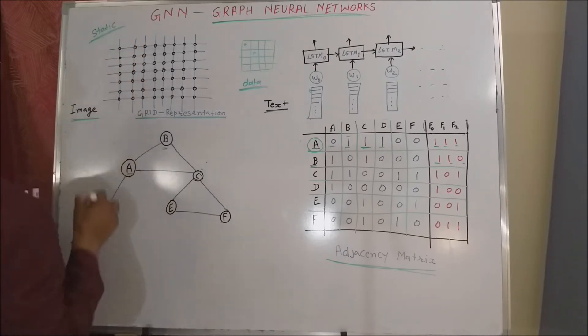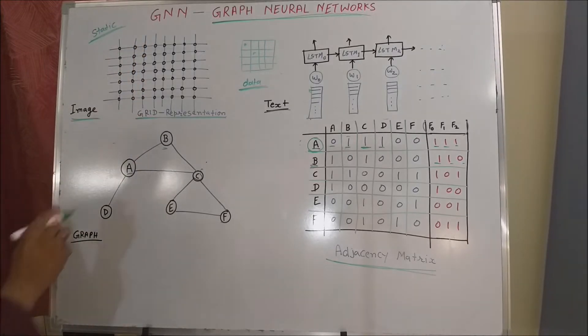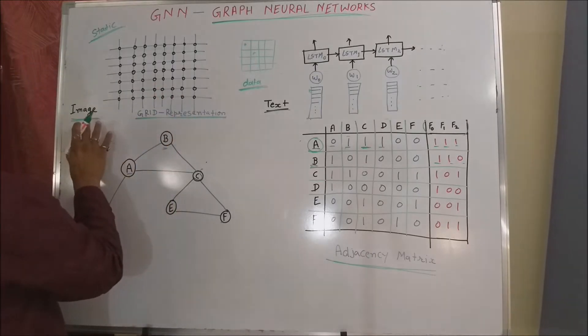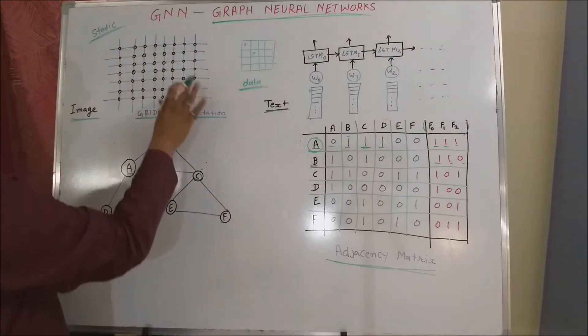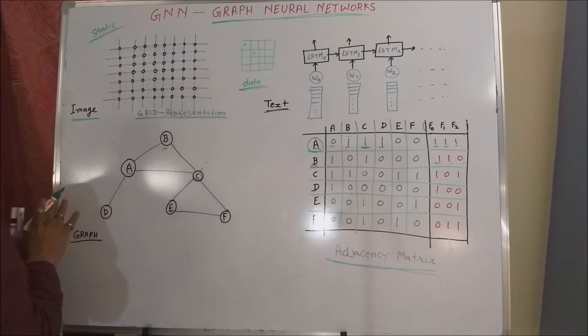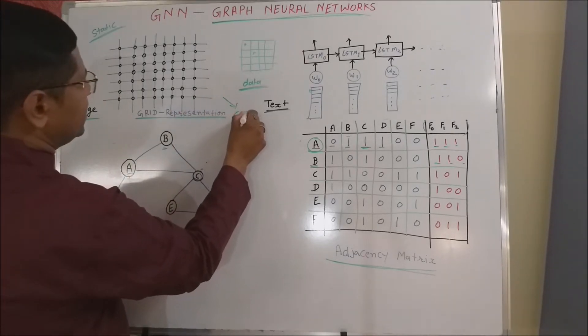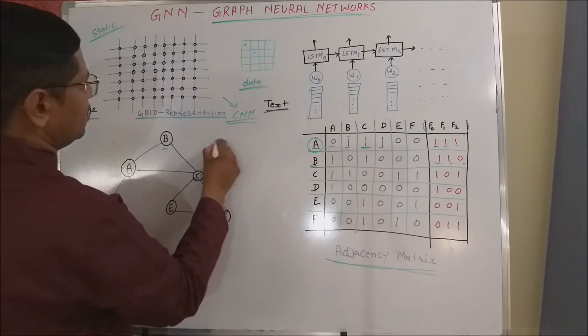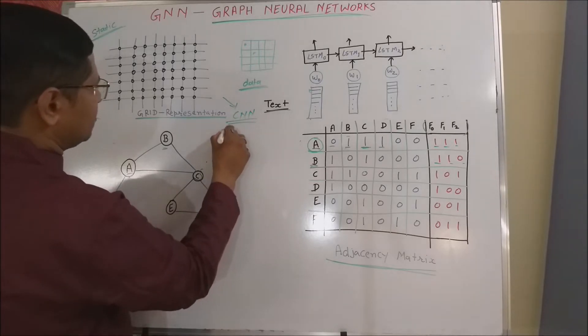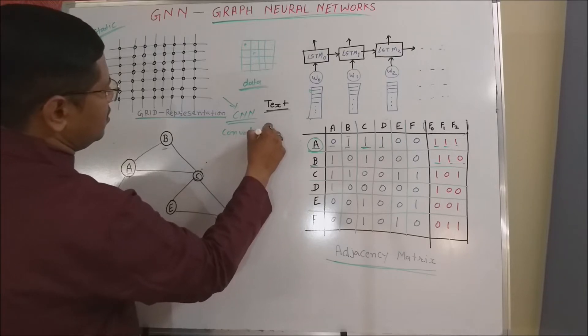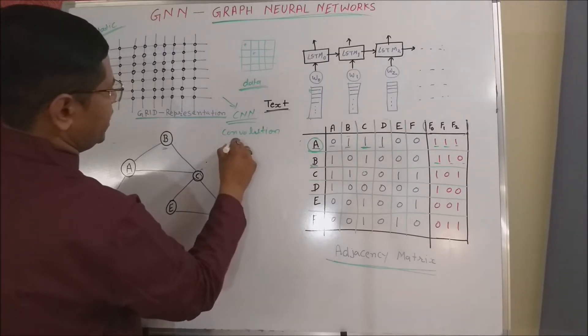Static nature of the data is one of the important features once we convert the image pixels into the grid representations. After that, it is very easy to apply the CNN, or we can say that stacks of convolution and poolings.